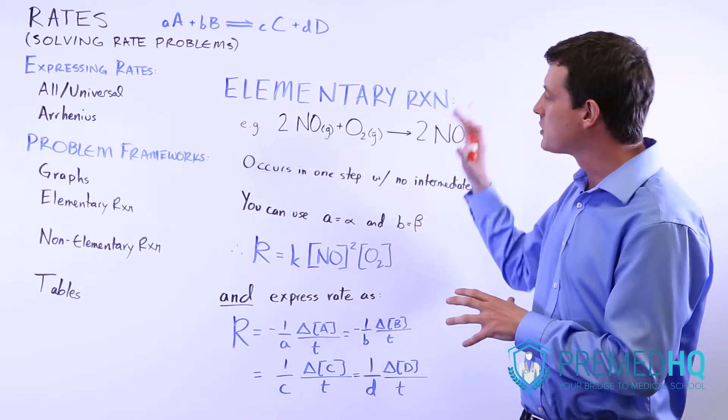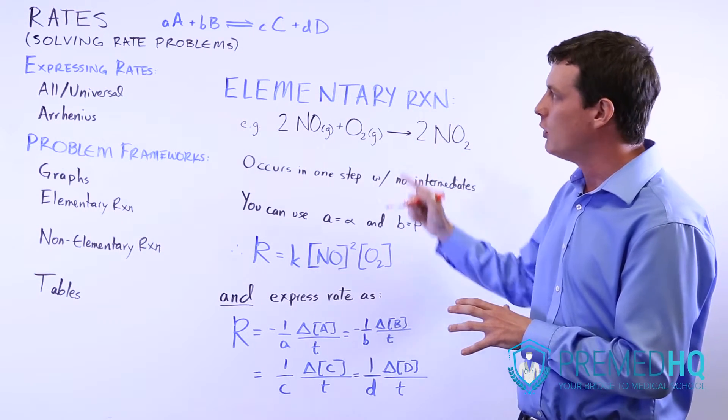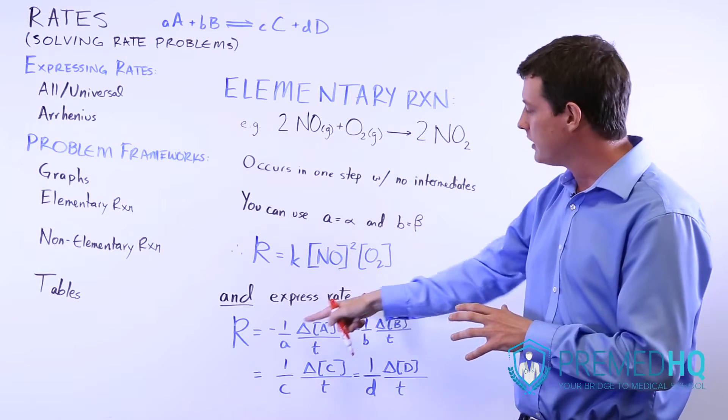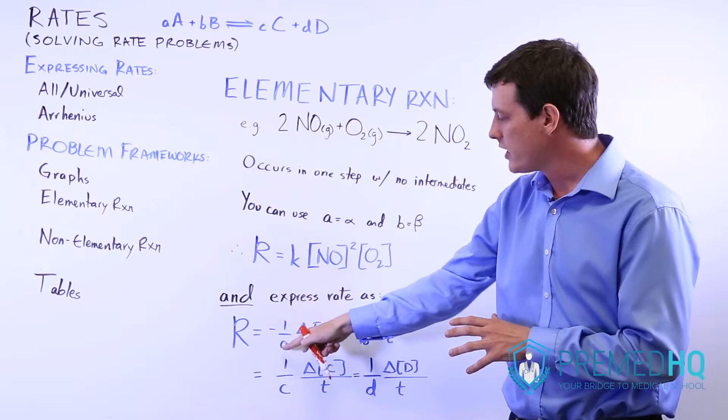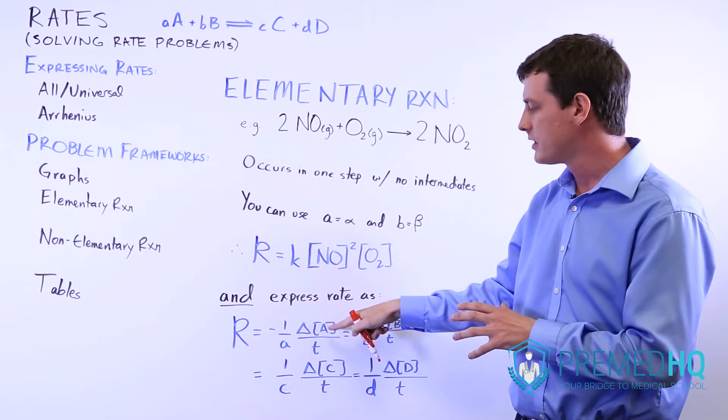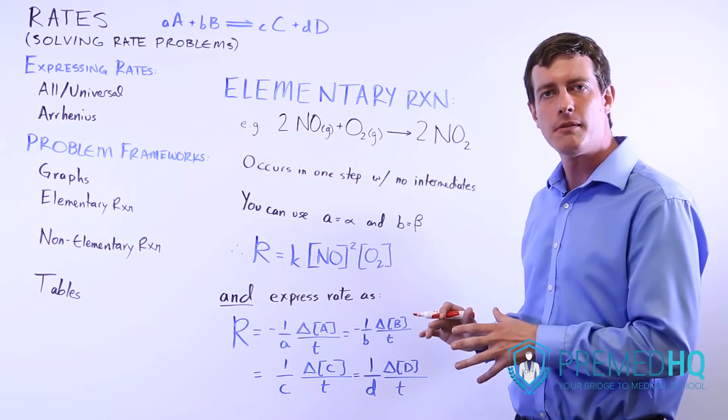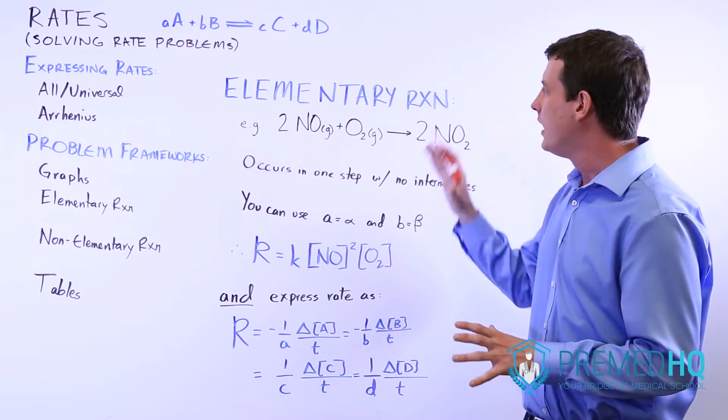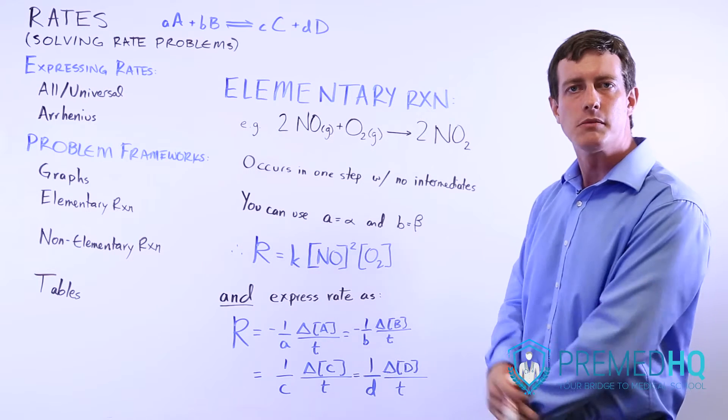If you understand these facts about elementary reactions—that you always use stoichiometry as your order, and that you can express it in terms of one over the stoichiometry times the change in that quantity over time—if you realize that this could be equal to that, then you'll be ready for any elementary reaction rate problem that comes your way.